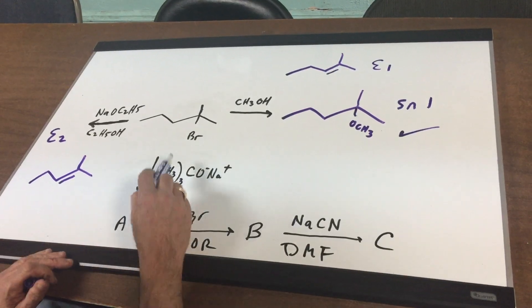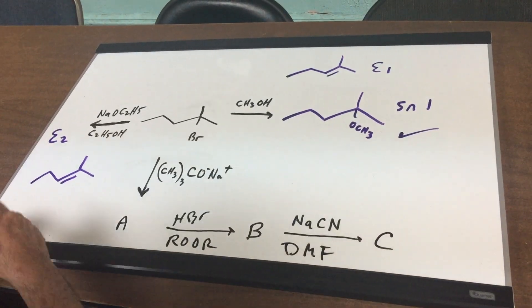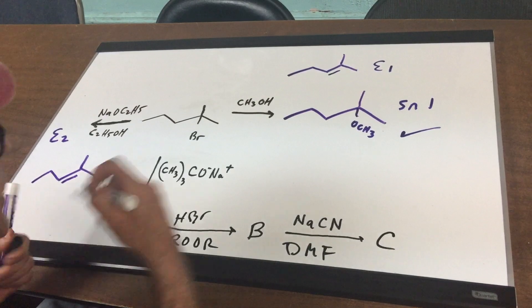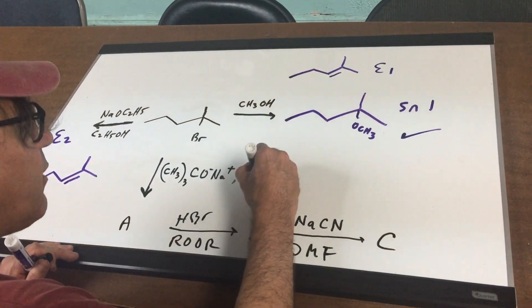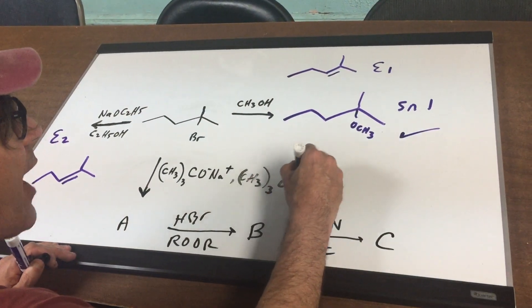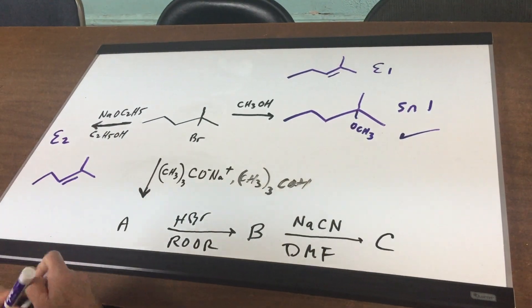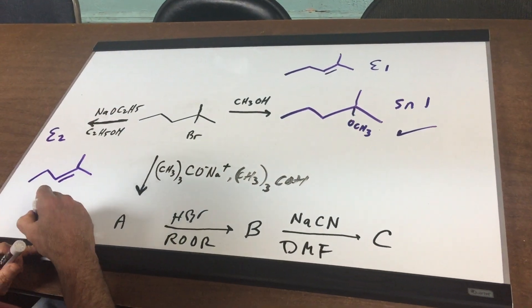In the next reaction, I do a similar reaction, and we have T-butoxide. Let me just put the solvent in. The solvent would be T-butyl alcohol. And when I do that, you are going to get another E2,